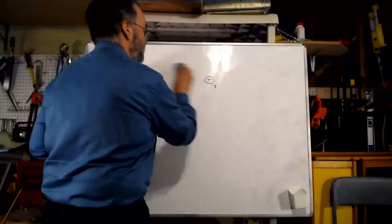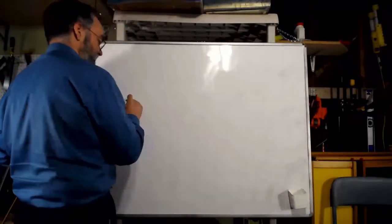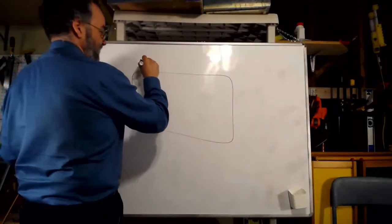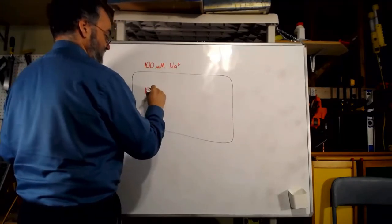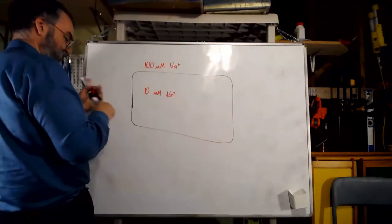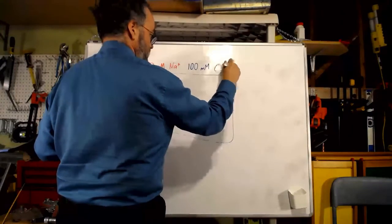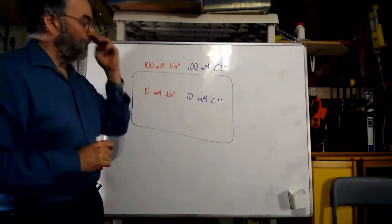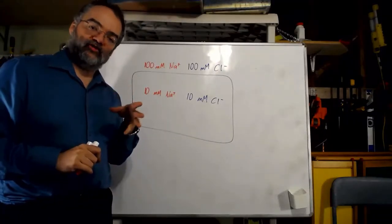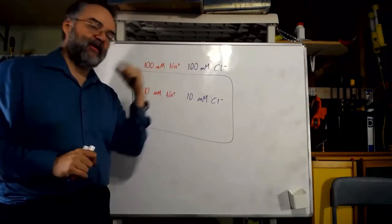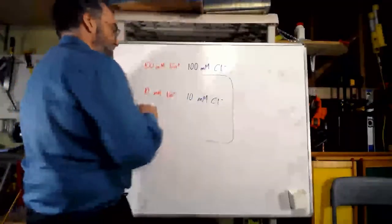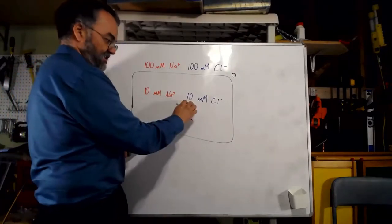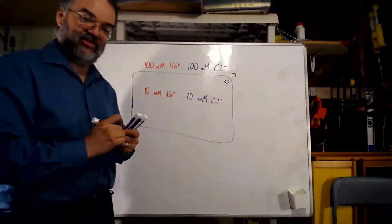So let's go back to the cell. Let's say this cell has a concentration of 100 millimolar sodium outside and 10 inside. And let's put the same concentrations of chloride inside and outside. When I look at the outside of the cell, I've got a certain amount of positive charge and the same amount of negative charge — so outside has no overall charge; it's electrically neutral. And the same is true inside — equal amounts of positive and negative, so the overall charge inside is also neutral, zero.